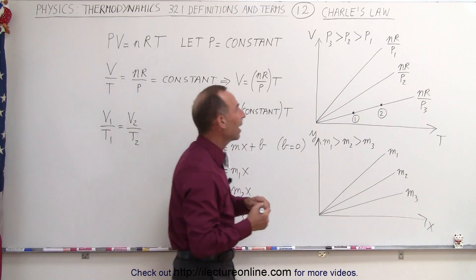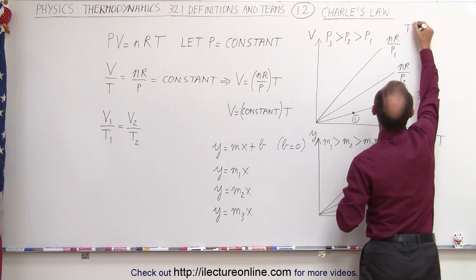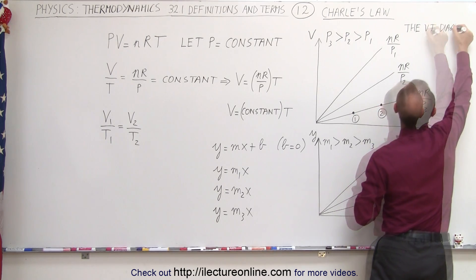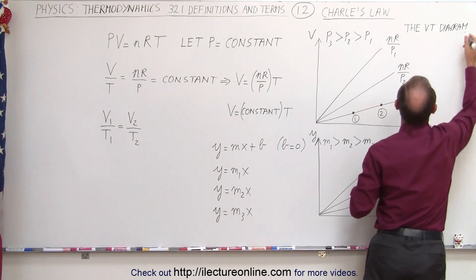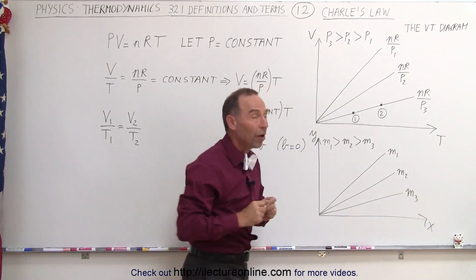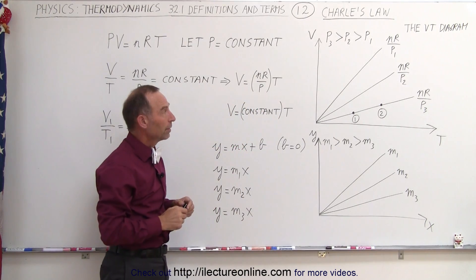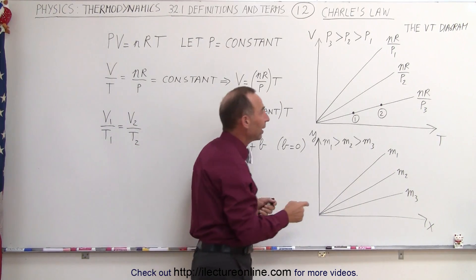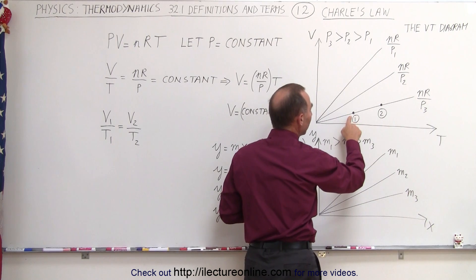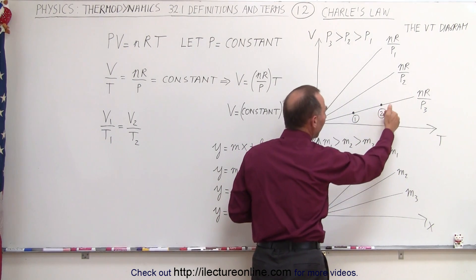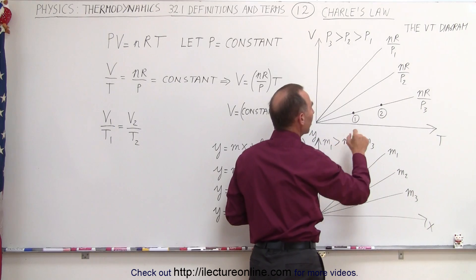Now here we're going to have what we call the VT diagram. Because the only two variables that can change are either the volume or the temperature. Now the way this is set up, notice that if you start at state 1 and then you go to state 2 by increasing the temperature, you'll have a proportional increase in the volume.